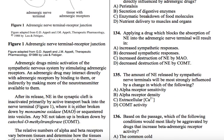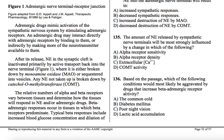Adrenergic drugs mimic activation of the sympathetic nervous system by stimulating adrenergic receptors — that's pretty obvious. An adrenergic drug may interact directly with adrenergic receptors by binding to them, or indirectly by making more of the neurotransmitter available to them. After its release, norepinephrine in the synaptic cleft is inactivated primarily by active transfer back into the nerve terminal — that's reuptake — where it is either broken down by monoamine oxidase, or sequestered into vesicles so it can't stimulate the postsynaptic neuron again.